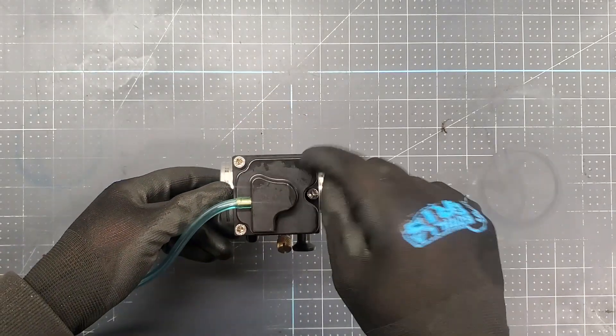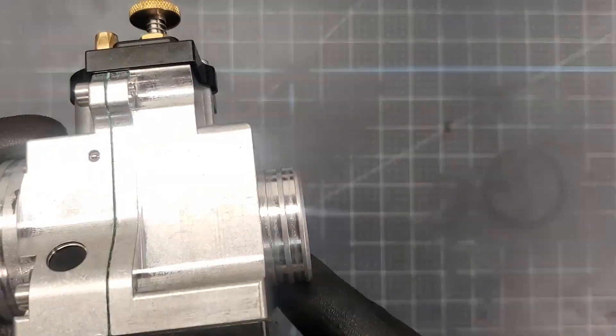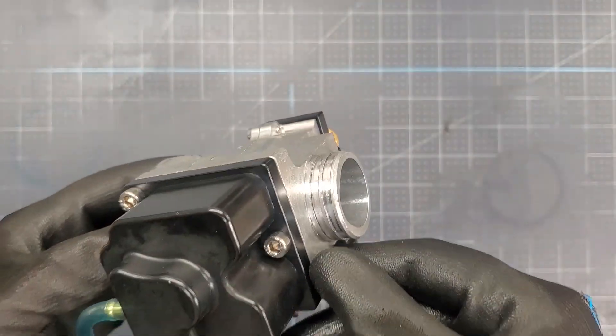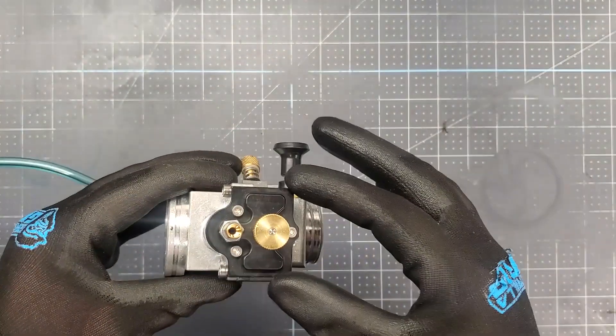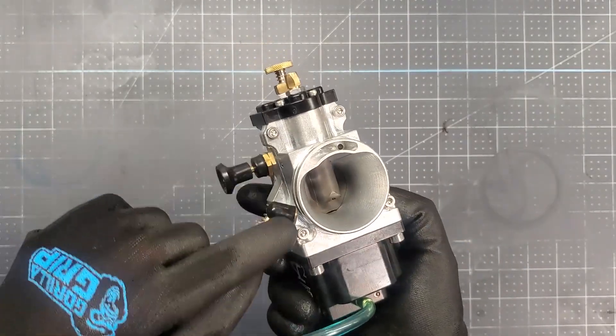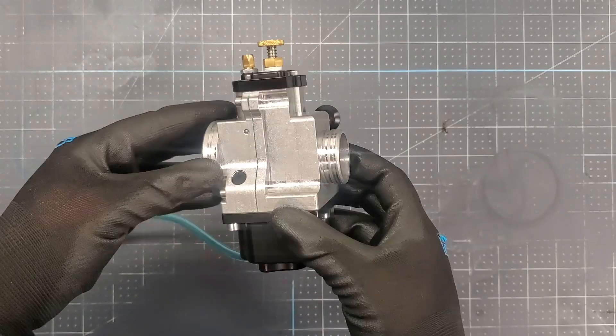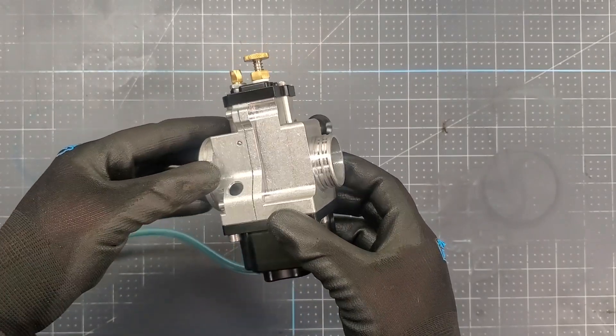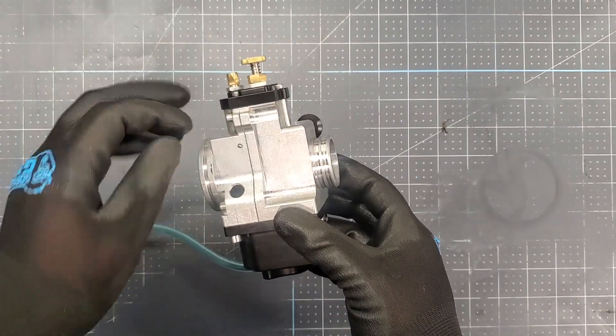The carburetor body, the float bowl and the cap are all machined from billet aluminum. I suspect due to the machining process the carburetor body consists of two pieces that are bolted together. There is a gasket in between.